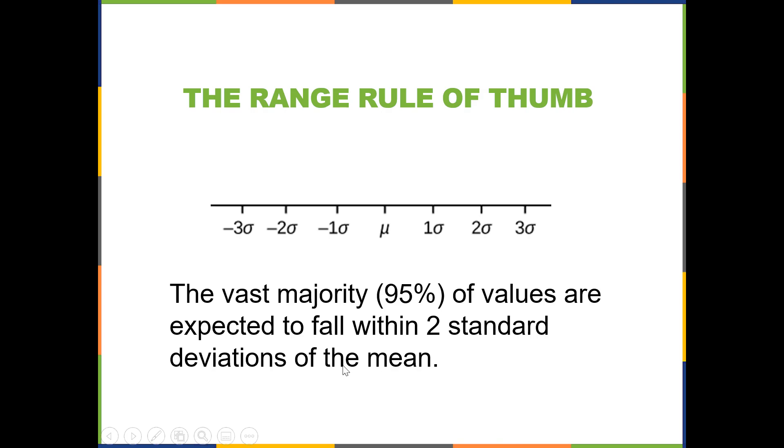So we'll start with the range rule of thumb, which again works for any distribution. The vast majority, or 95% of values, are expected to fall within two standard deviations of the mean. So we expect almost all, the vast majority, 95% of the values to fall within this range. There's your mean in the center, move two standard deviations up and two standard deviations down, and that's where almost all your data is going to fall. Pretty simple.